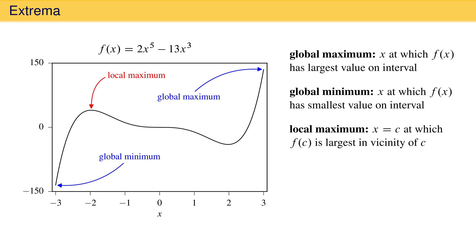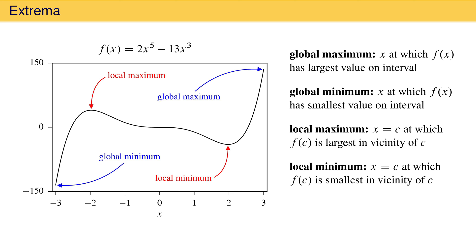There is also an x-coordinate near positive 2 at which the function becomes relatively small compared to points around it. It is not the global minimum. This point is called a local minimum — a point, call it x equals c, at which the function is smallest in the local vicinity. For a point to be a local minimum, the function must become larger moving away from the local minimum in both the plus x and minus x directions. All of these quantities are collectively called extrema because they are extremes of the function. We will be interested mostly in local extrema because they have physical meaning and because there are well-established criteria for identifying them.